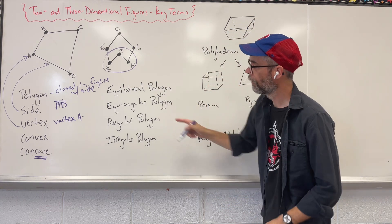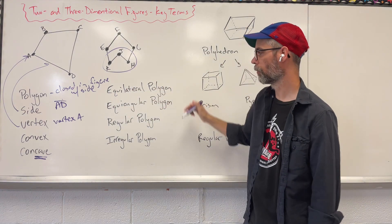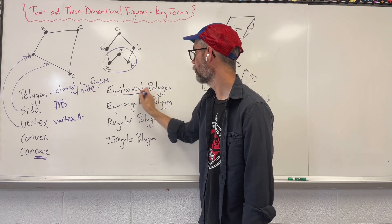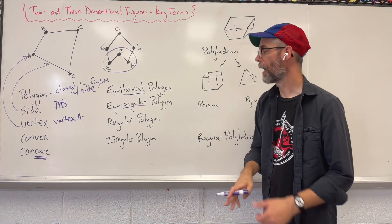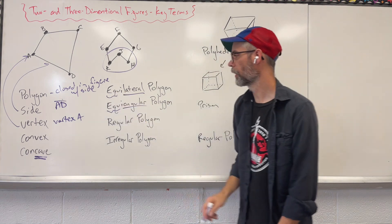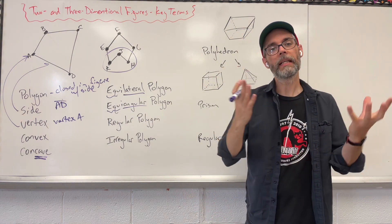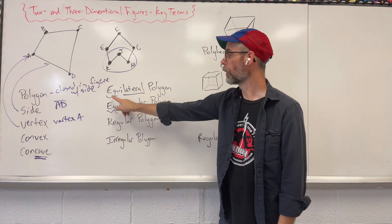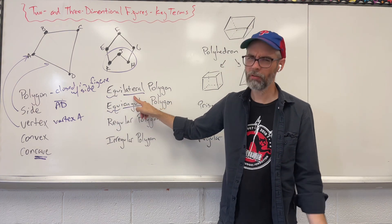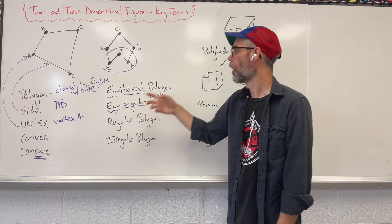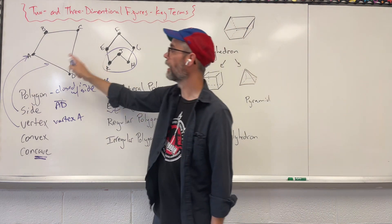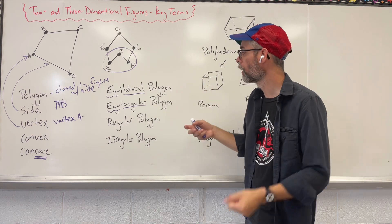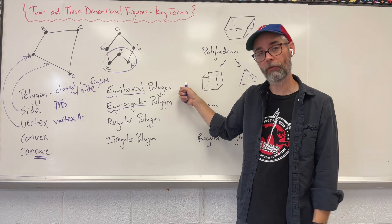Now these next two terms, they look very similar. Equilateral, equiangular. We have to look at the back half. Equi is kind of like saying equal. I'm looking for equal angles or equal, lateral is going to mean sides. So equal sides, when all of your sides of your polygon, if they happen to be the same and all congruent to each other, we call that an equilateral polygon.